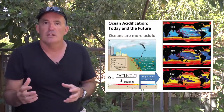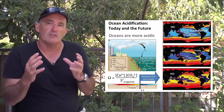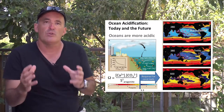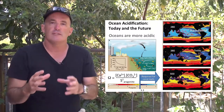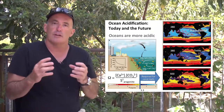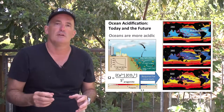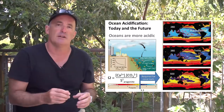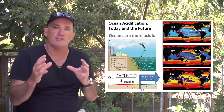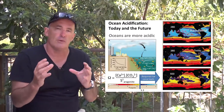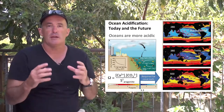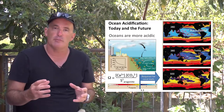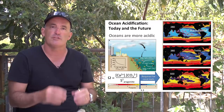In studies of the impact of ocean acidification on corals, it has been useful to relate how calcification varies with the so-called aragonite saturation state. The aragonite saturation state is calculated by multiplying the concentration of calcium ions by the concentration of carbonate ions, and dividing this product by the solubility constant for aragonite at a particular temperature. Aragonite is the crystalline form of calcium carbonate that is used by corals to build their skeletons.